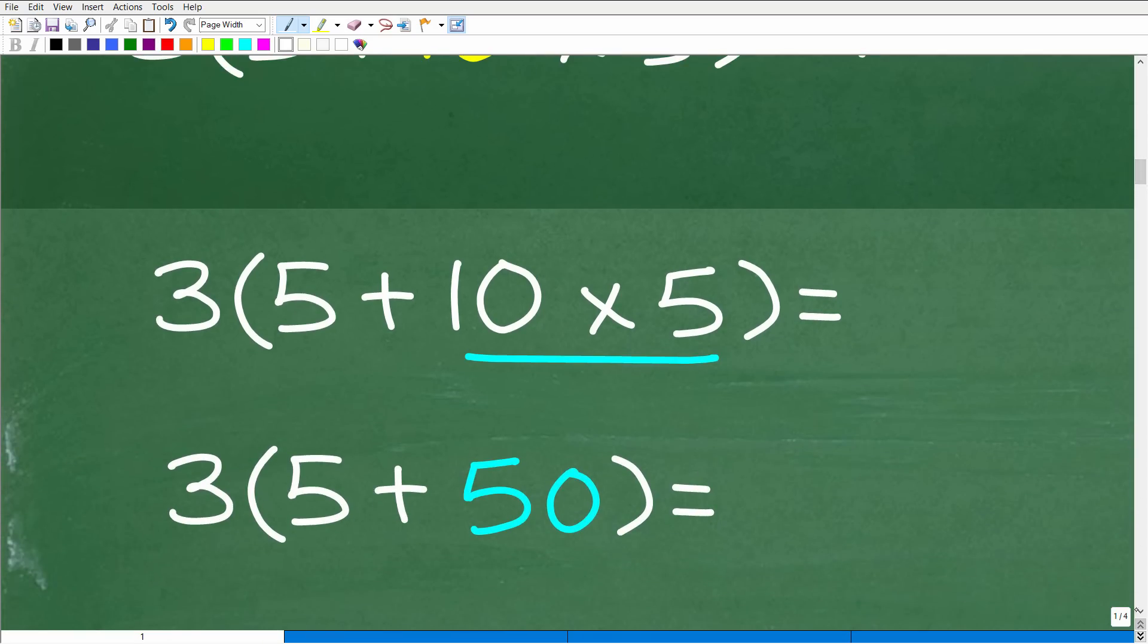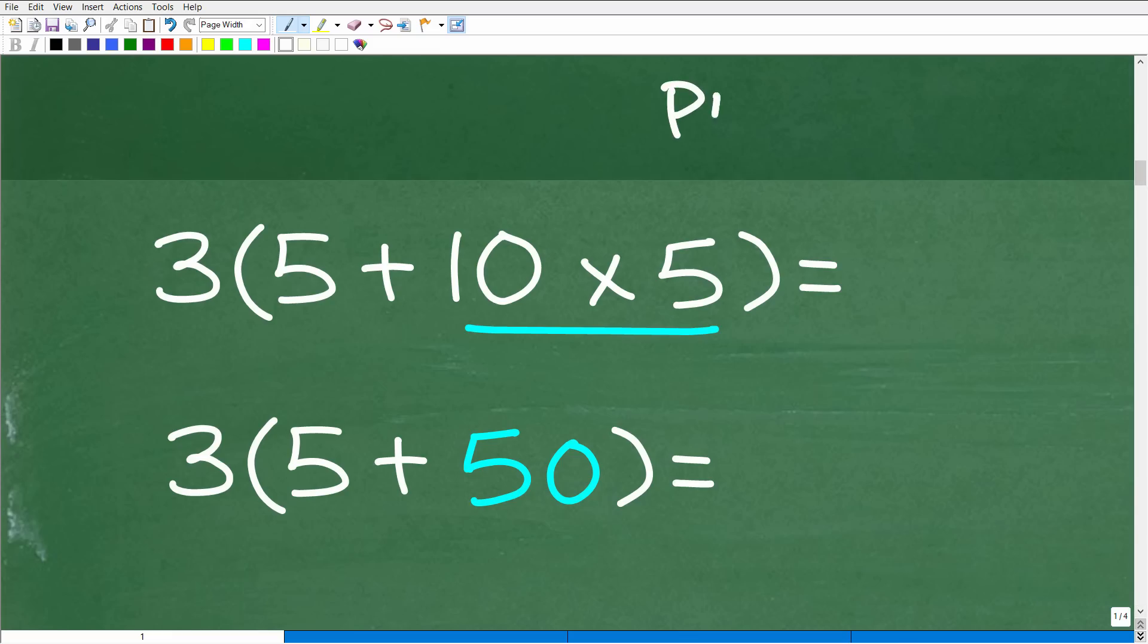What do we do next? We're not done with the parentheses. In PEMDAS, this P is not finished until you completely finish what's inside the parentheses. We have addition and multiplication here. Clearly multiplication comes before addition and subtraction. 10 times 5 is 50. Now we have 3 times (5 + 50).